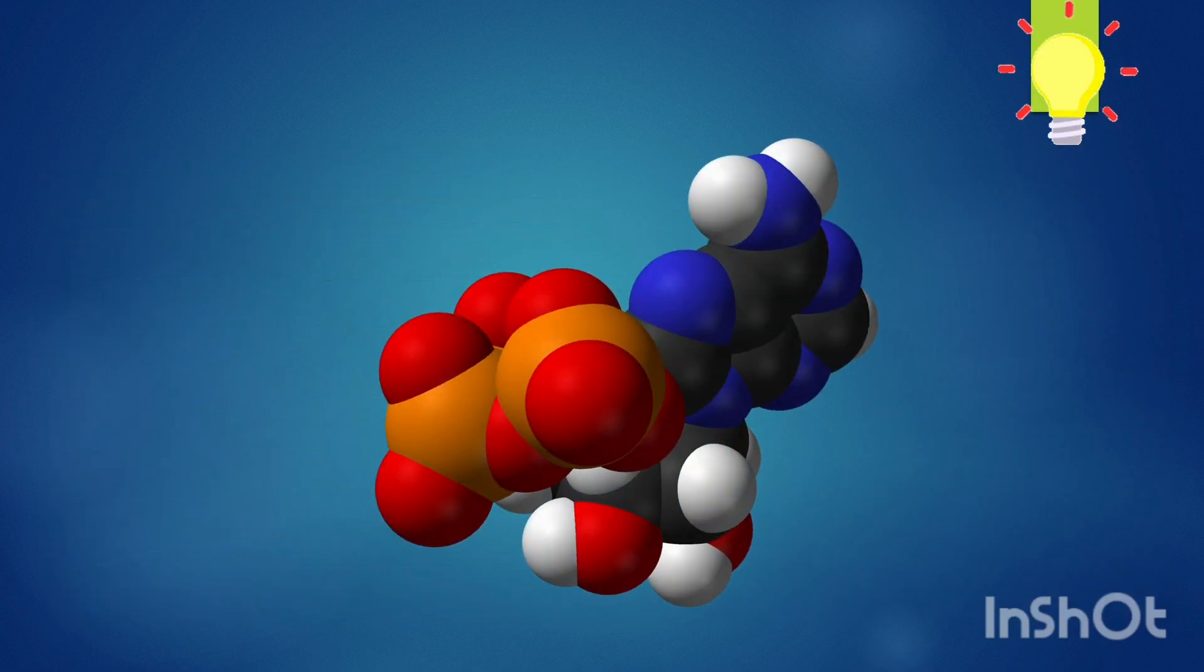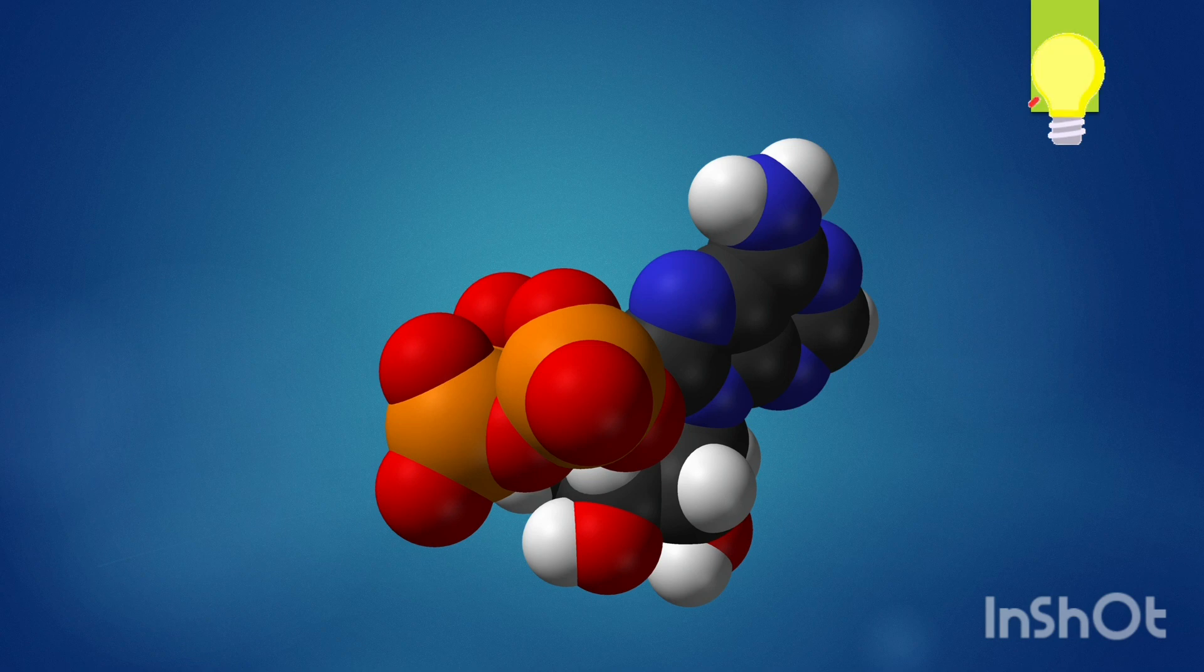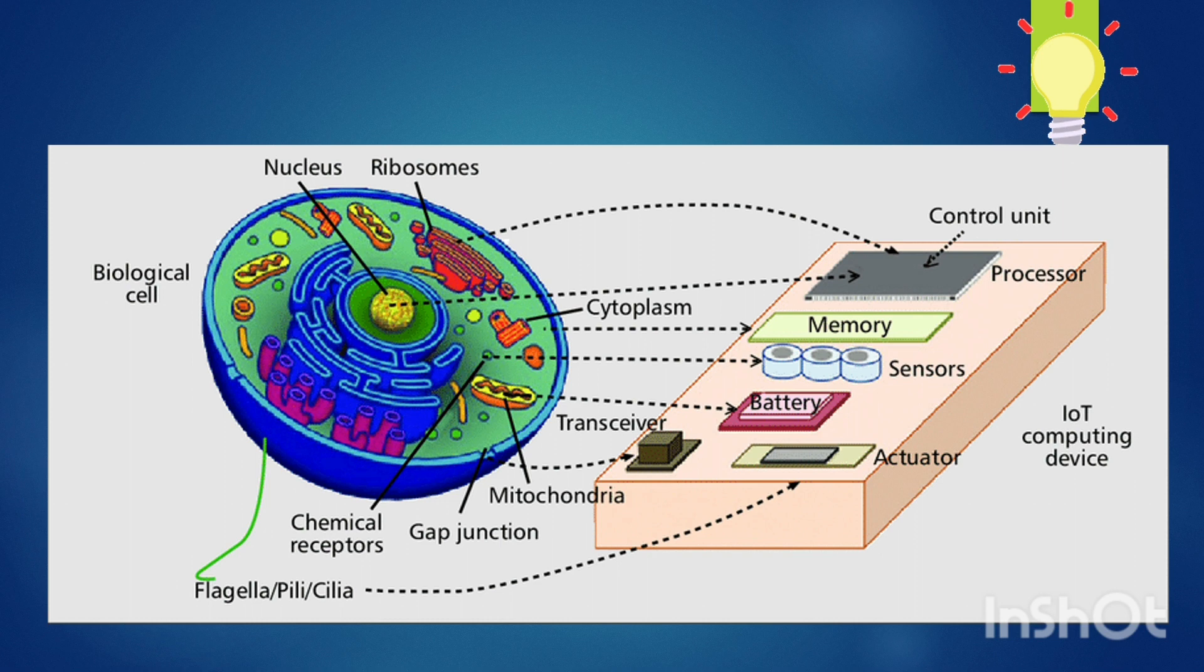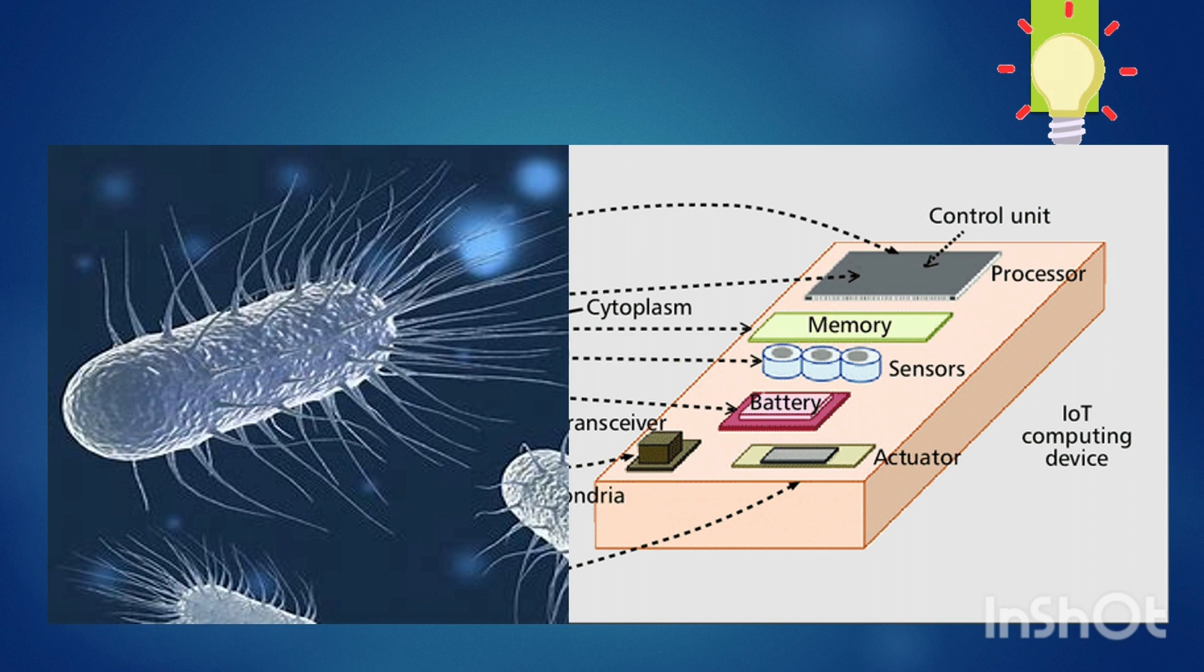Energy is supplied to the parts of the embedded system by the power unit in the form of electricity. In a cell, ATP molecules correspond to the energy reservoir. Processes such as sensing and actuation that help the device interact with its surroundings and acquire data are similar to the way a cell chemically recognizes external molecules or stimuli, for example by using flagella.